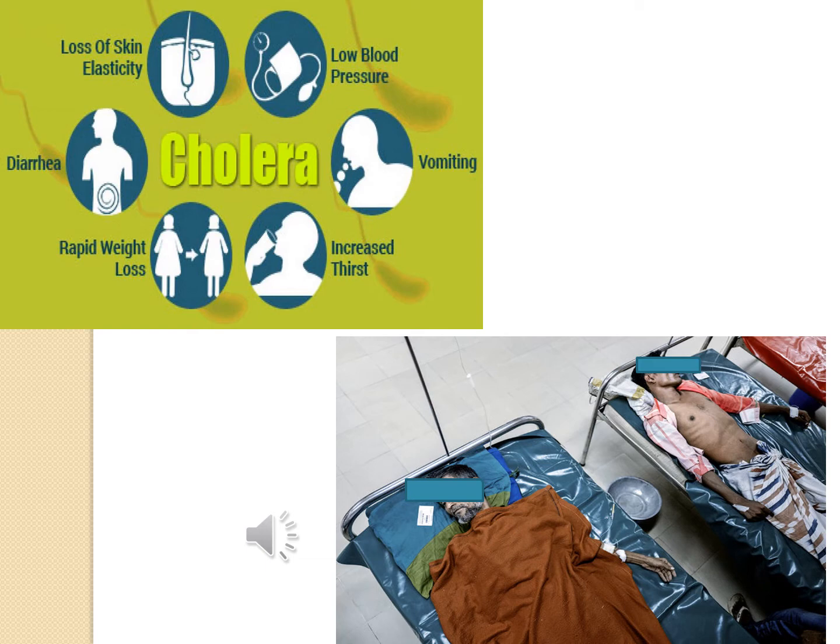This slide shows the different signs and symptoms of cholera discussed earlier: diarrhea, rapid weight loss, increased thirst, vomiting, low blood pressure due to dehydration, and loss of skin elasticity.